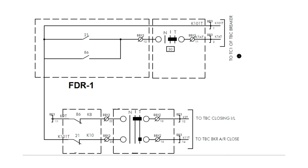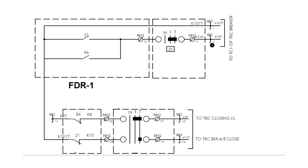The TBC tripping circuit shows how the trip is transferred from the feeder 1 panel to the TBC breaker. K101T — that is the positive DC of TBC 1 — is coming from the TBC panel. 21 is the main relay, that is a distance relay of feeder 1 panel. If a fault occurs in feeder 1, the distance relay 21 will detect this fault and send the trip signal to the master trip relay of its own panel. Via the 21 relay contact and 86 relay contact, the positive DC will flow and it will transfer to the TBC panel via the NIT switch contact in inter and transfer position. If the NIT switch is in either inter or transfer position, this trip will be transferred to the TBC breaker and the transfer bus breaker will be tripped. This is the TC1 for the TBC breaker.